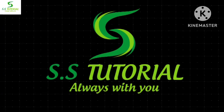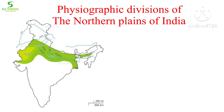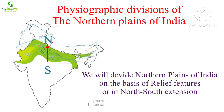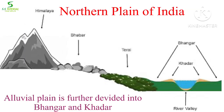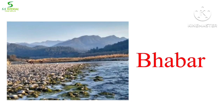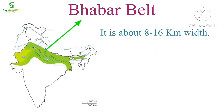Welcome to SS Tutorial. Today in this video we will discuss the physiographic division of the Northern Plain of India. On the basis of relief features, the Northern Plain of India is divided into three parts: Bhabar, Tarai, and Alluvial Plain. Let's know them one by one.